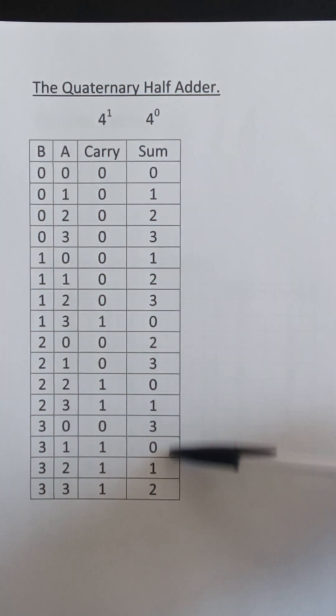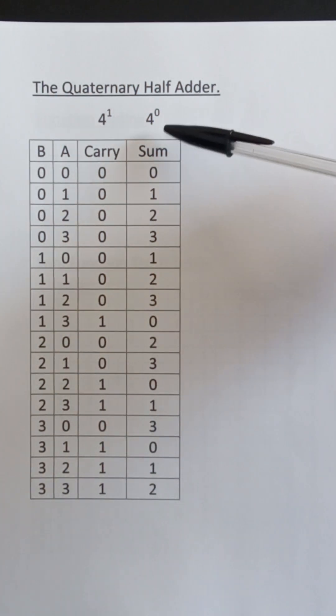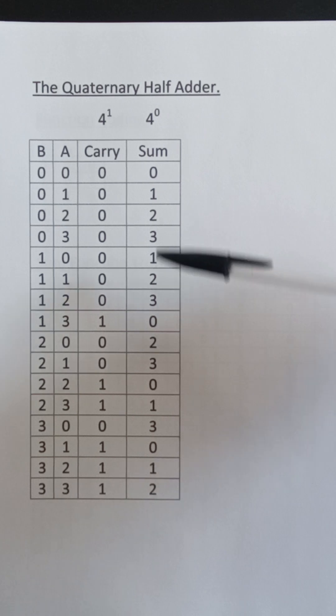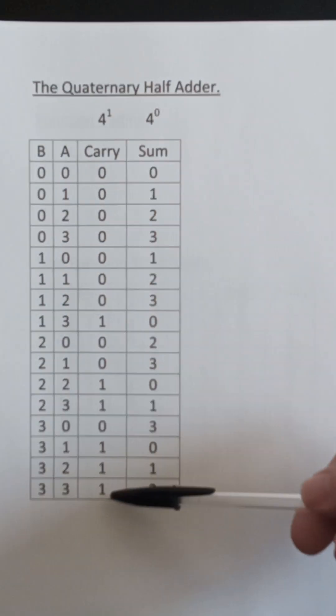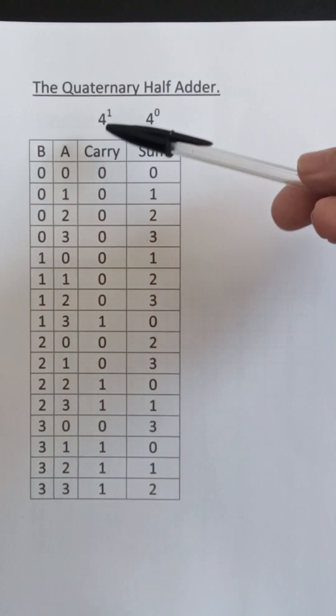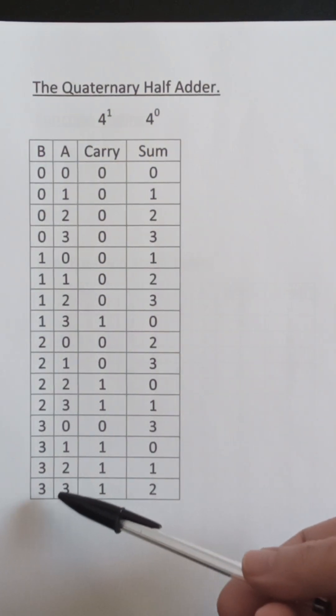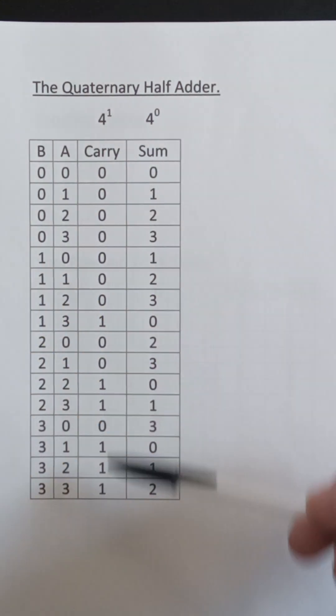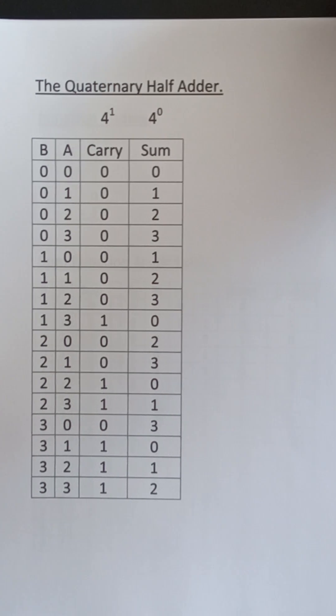This is the sum column with weighting 1, 4 to the 0 equals 1. This is the carry column with weighting 4, 4 to the 1 is 4. So for example, 3 plus 3 is 6 which equals 4 times 1 plus 2 times 1 which equals 6. So that's the quaternary half adder.